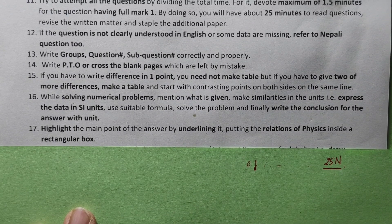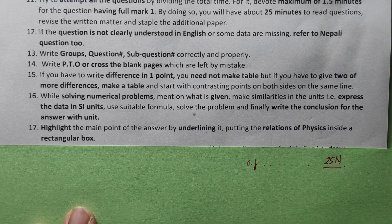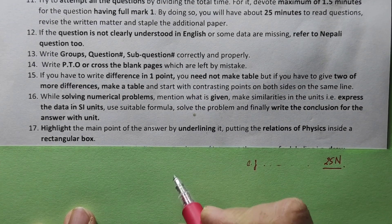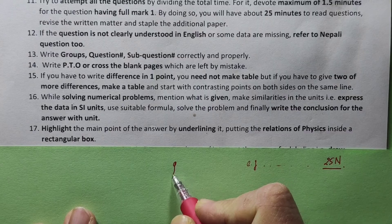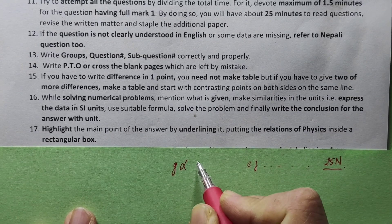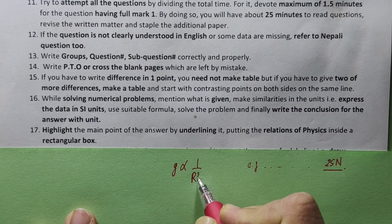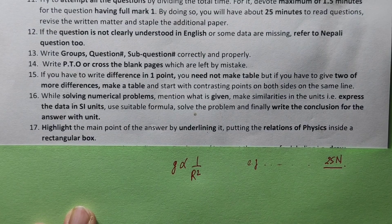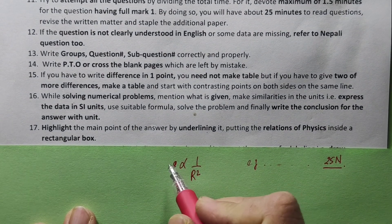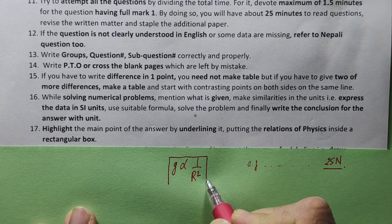For physics, you can put linear relations inside a box. For example, g is proportional to 1 upon r squared. You can write this in a rectangular box to highlight the relation.